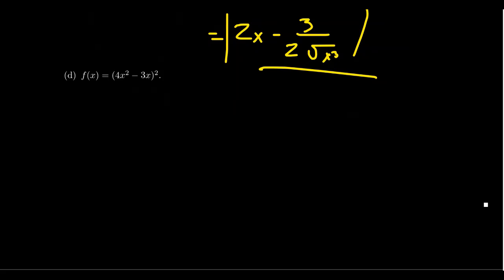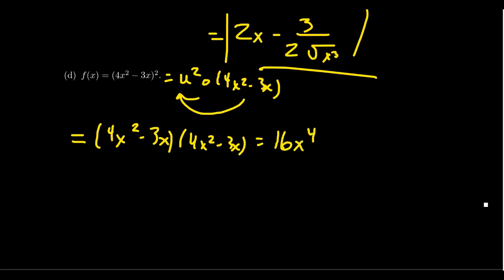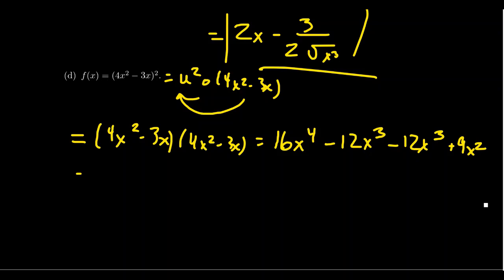How about f of x equals 4x squared minus 3x, quantity squared? Since this is squared, we don't have a power function — we have a polynomial inside a power function. To prep it for differentiation, we need to foil: 4x squared minus 3x times 4x squared minus 3x. That gives 16x to the fourth, then negative 12x cubed twice, and positive 9x squared. Combining like terms: 16x to the fourth minus 24x cubed plus 9x squared.